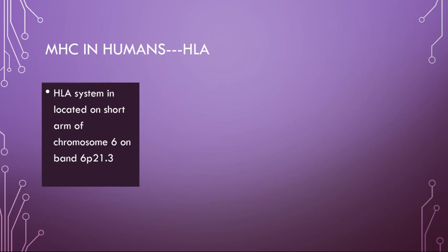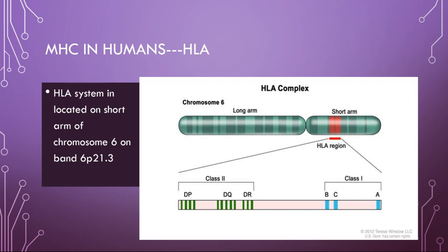They later identified that this HLA complex is located on the short arm of chromosome 6 at band 6p21.3. As you can see in the diagram, this is a very compactly packed region on the short arm of chromosome 6 that contains a broad range of different structural variations and identities representing different immune responses — this is what we understand as the HLA region.